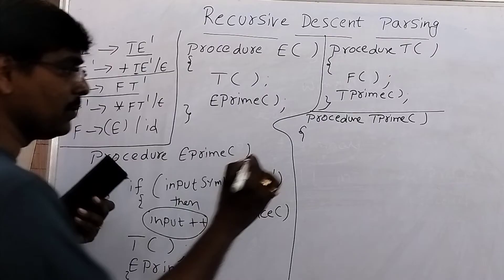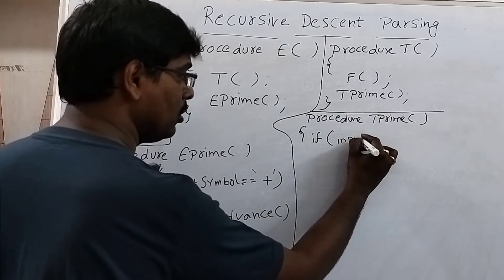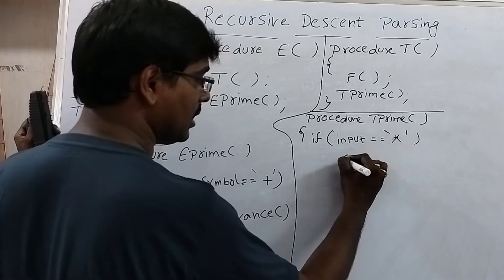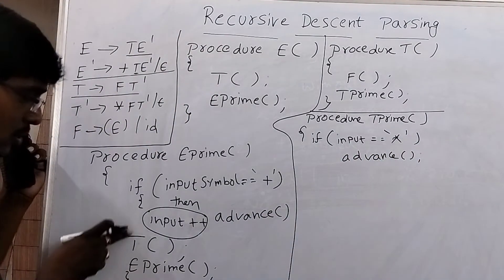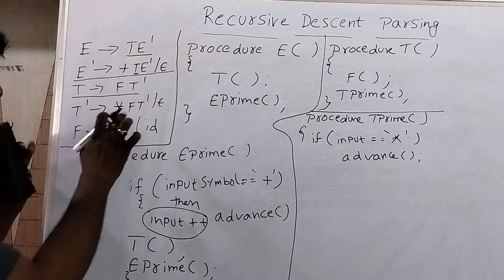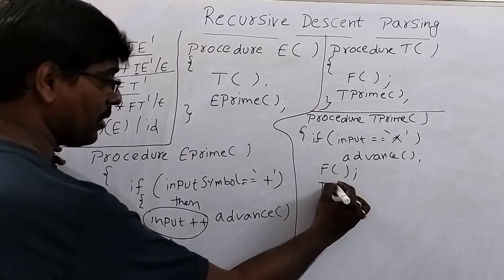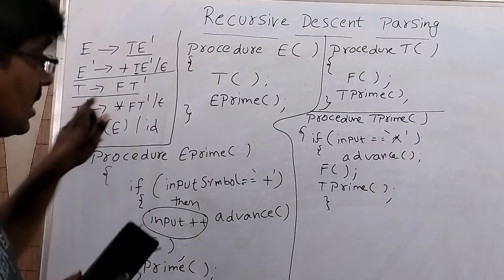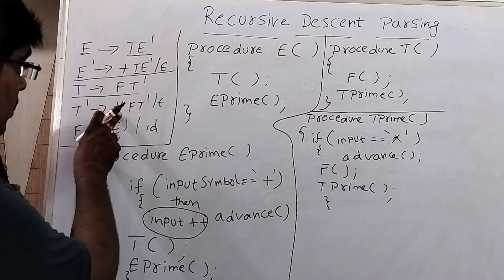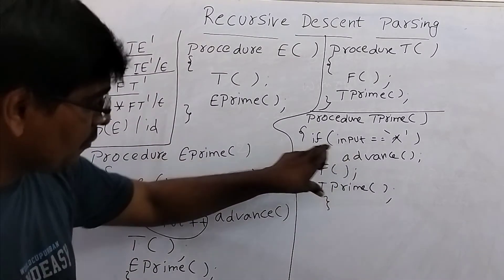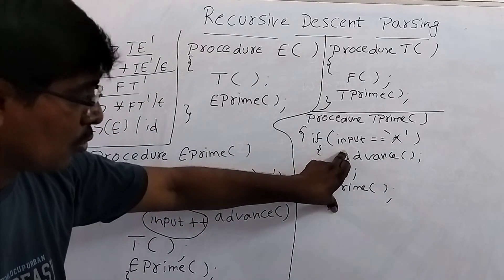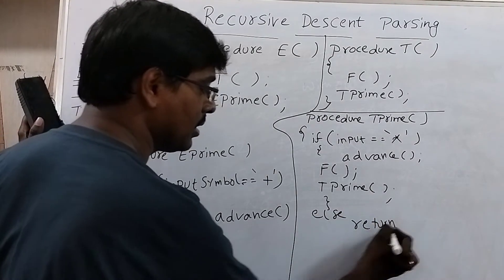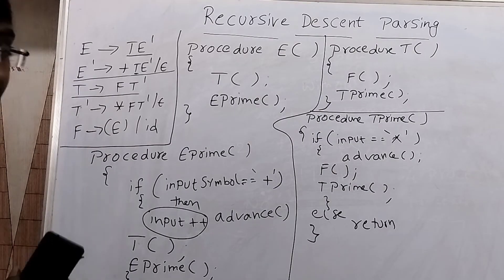In T_prime(), the first terminal is star. If input_symbol == '*', then advance() — or input++ — followed by calling F(), and then calling T_prime(). This entire block is under the if case, because T' has two productions: one starts with star and another starts with epsilon. If it starts with star, perform these operations; else return null — an empty return.